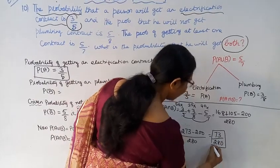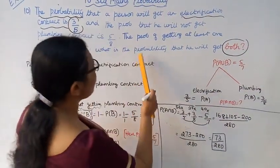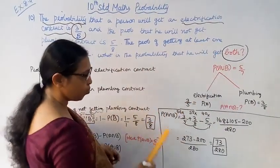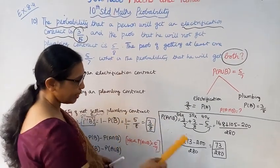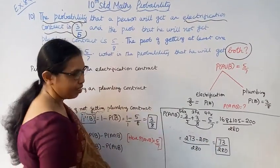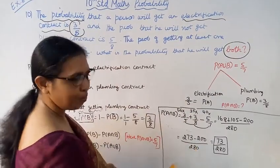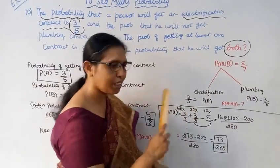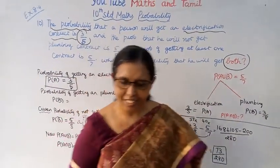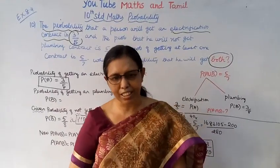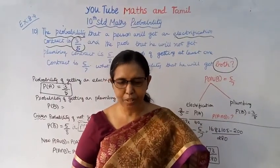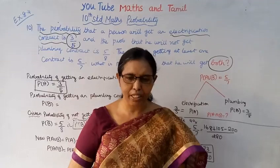Therefore, the probability that he will get both contracts is 73/280. That's our answer. If you find this channel helpful, please subscribe, like the videos, and click the bell button.